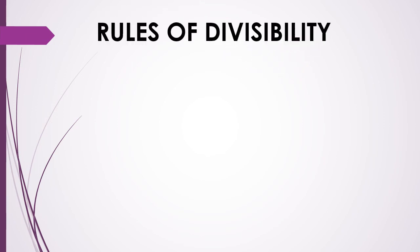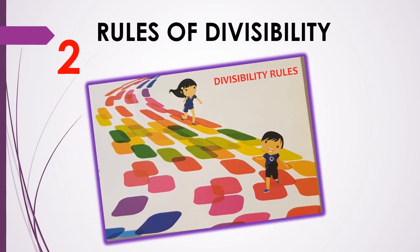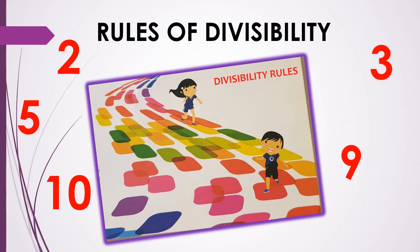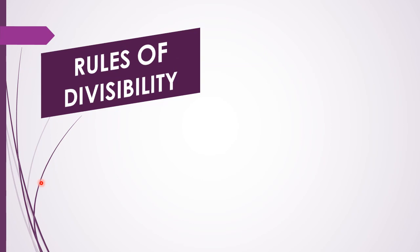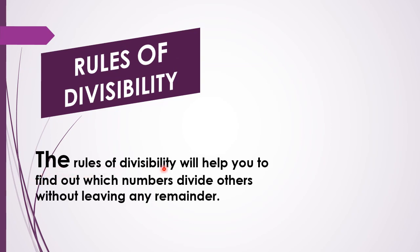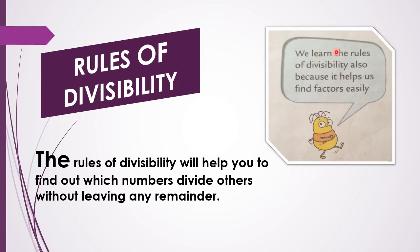The next topic of this lesson is rules of divisibility. You will learn the divisibility rules of 2, 5, 10, 3 and 9. We learn rules of divisibility because they help you find out which numbers divide others without leaving any remainder — that is, the remainder must be 0.